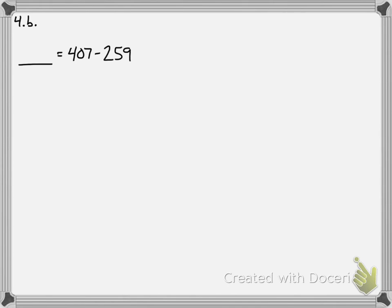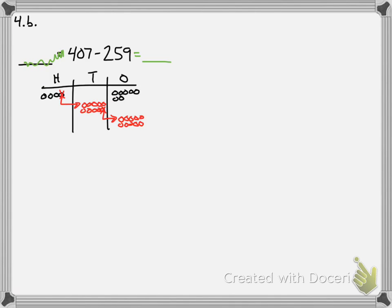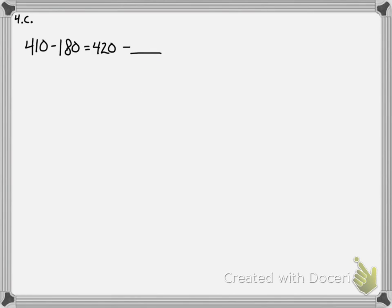For this one, they're just trying to trick you again, so I move the equal sign back and solve it normally. I subtract 9 in the ones: leaving 8. In the tens I subtract 5: leaving 4. I subtract 2 in the hundreds, and I end up with 148.